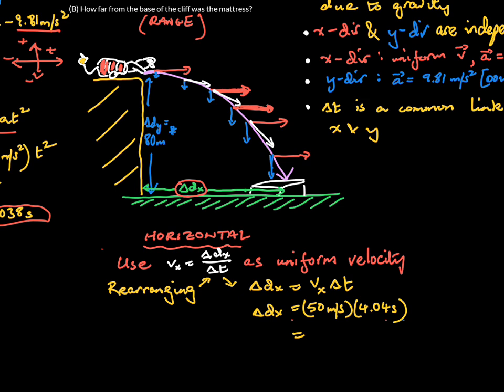In the X direction, there's uniform velocity, so there's no acceleration. We do not use the big five. Rather, we use V_x equals Delta D X over Delta T. It's a simple equation because V_x is not changing.